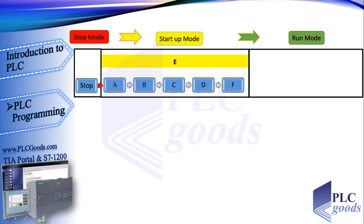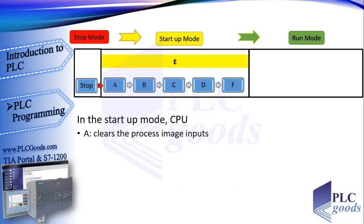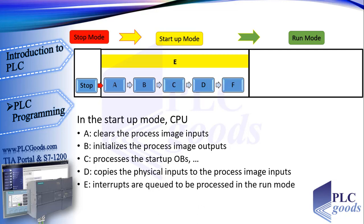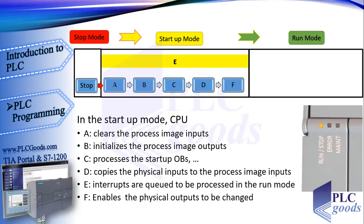In the startup mode, the CPU does tasks A through F: A — clears the process image inputs, which is a memory where the PLC stores its input states; B — initializes the process image outputs, which is a memory where PLC output states are stored; C — processes the startup organization blocks such as OB100; D — copies the physical inputs to the process image inputs; E — interrupts are queued to be processed in the run mode; and F — enables the physical outputs to be changed. In this mode, the run/stop LED is flashing, alternating green and yellow, indicating that the CPU is in startup mode.